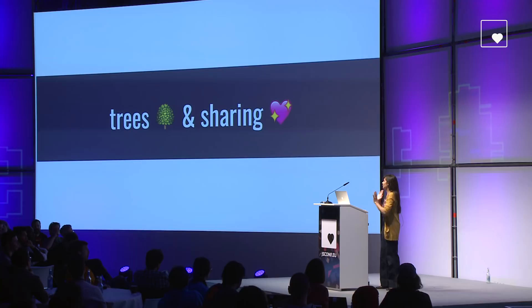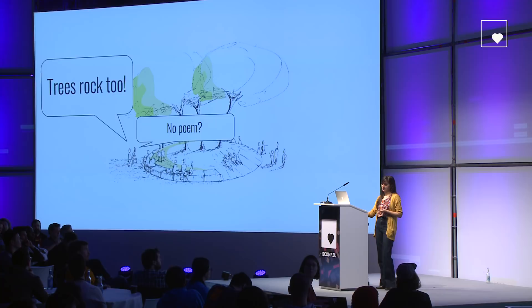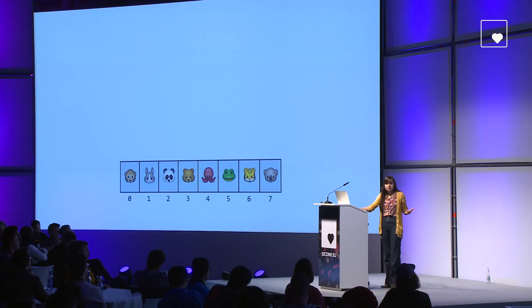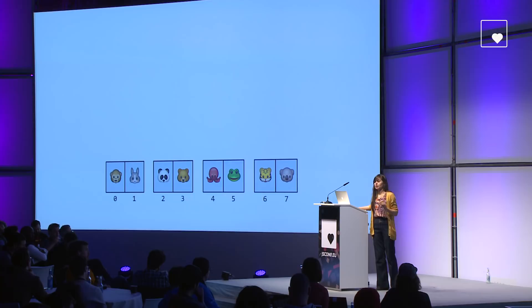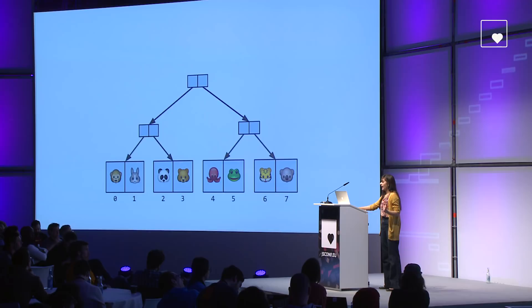Let's talk about trees, because trees rock pretty hard as well. Imagine we could represent our zoo array as a tree. We put all of our animals — all of our values — in the leaves of a tree, two per leaf as buddies. We connect them together with intermediate nodes going up to a root node that connects the whole structure. That root is now our array, represented as a tree. This is my zoo in a tree structure.